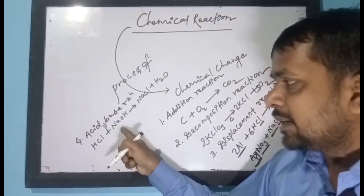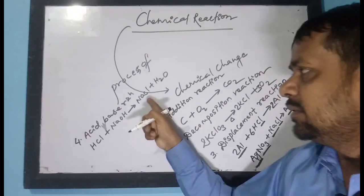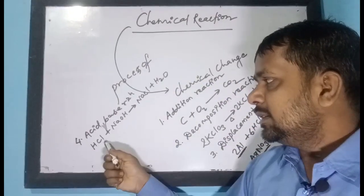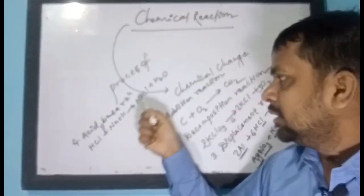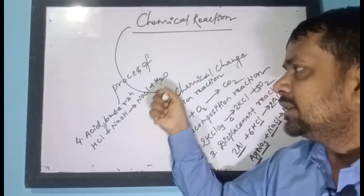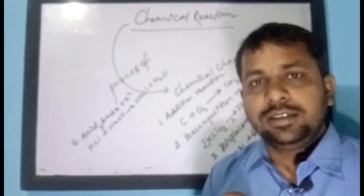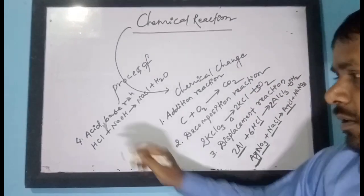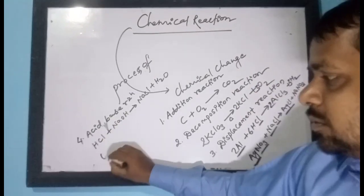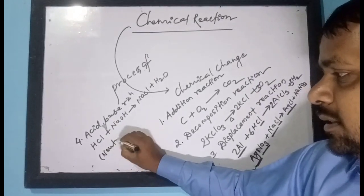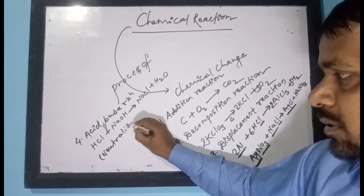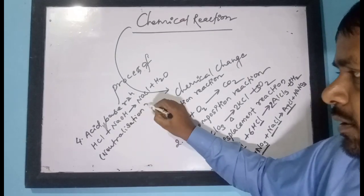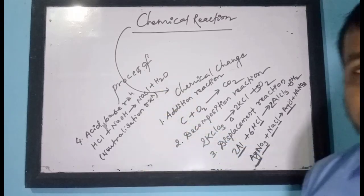In the acid-base reaction, HCl reacts with NaOH to form NaCl and H₂O. Acid reacts with base to form salt and water. This reaction is called an acid-base reaction, also known as a neutralization reaction.